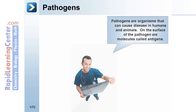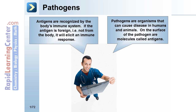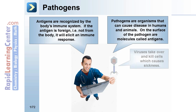Pathogens are organisms that can cause disease in humans and animals. On the surface of the pathogen are molecules called antigens. Antigens are recognized by the body's immune system. If the antigen is foreign — i.e., not from the body — it will elicit an immune response.